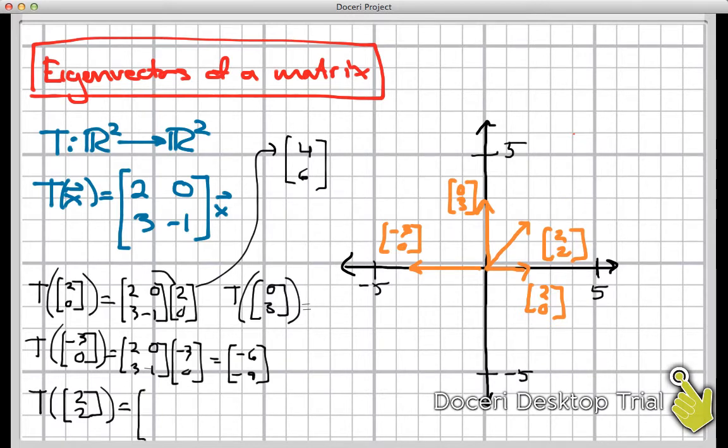Well, same process. I'm going to multiply that vector times [2, 0, 3, -1], times (2,2), and just do the matrix multiplication here. And let's see what I get. I get 4, and then the second component I would get 3 times 2, plus -1 times 2, that's 4.